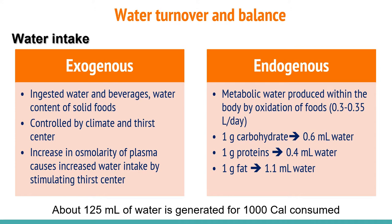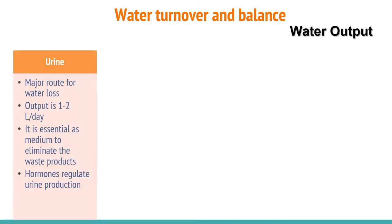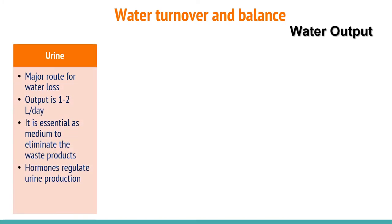Let's see the sources of water output. Water output is also called water loss. There are four distinct routes for elimination of water from the body: urine, skin, lungs, and feces. Urine is the major route of water loss; in a healthy individual, urine output is about 1 to 2 liters per day. It is essential as a medium to eliminate water-soluble waste products. Urine production is regulated by vasopressin, also known as antidiuretic hormone, from the posterior pituitary gland. An increase in osmolality promotes ADH secretion, which leads to increased water reabsorption from the renal tubules.